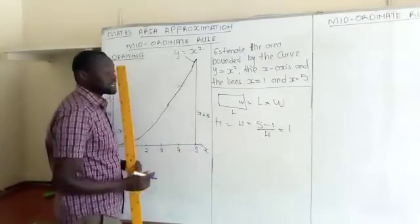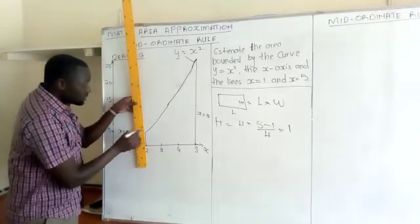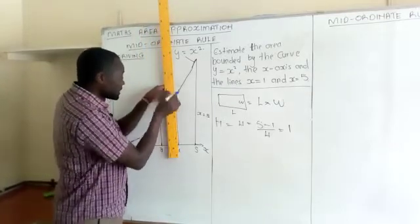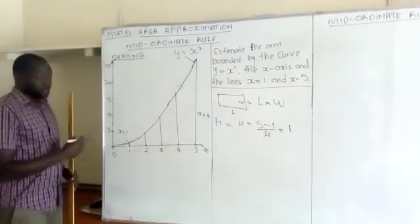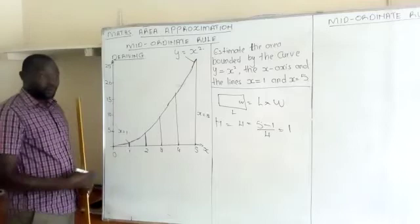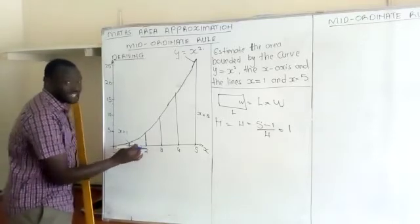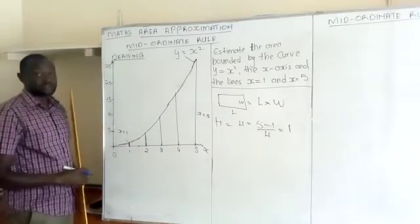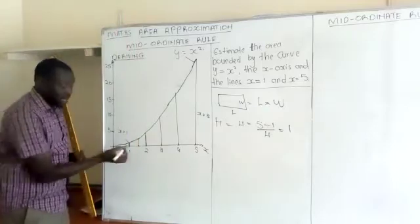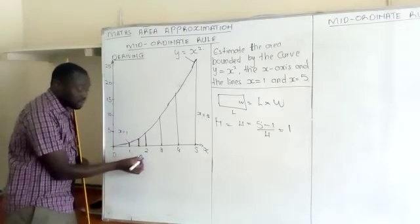We'll use four rectangles, so the width — denoted h — is one unit. From 1 to 2 we have a rectangle, from 2 to 3 another, from 3 to 4 another, and finally from 4 to 5 the last rectangle. Now, for the first rectangle with boundaries at x equals 1 and x equals 2, we don't take the height at either edge — we take the height at the midpoint, which is x equals 1.5. This is why we call it the mid-ordinate rule.